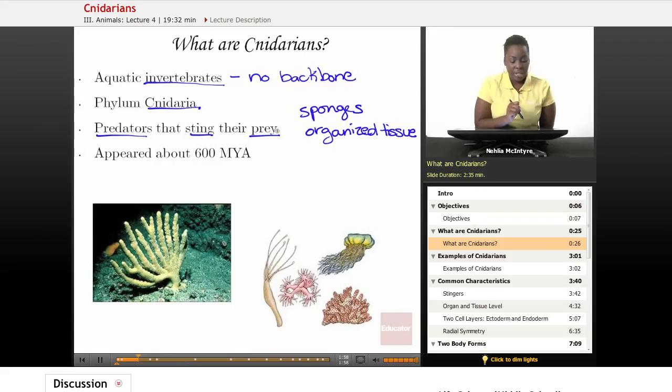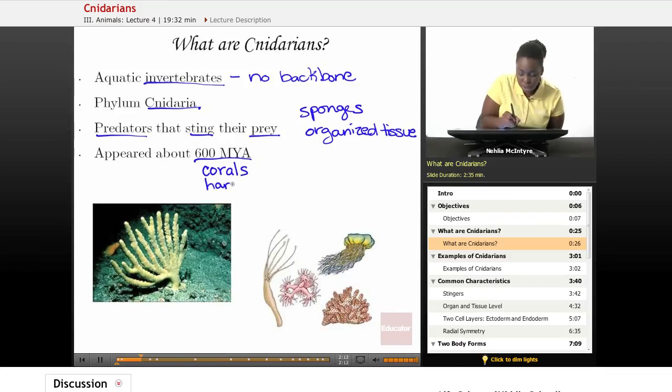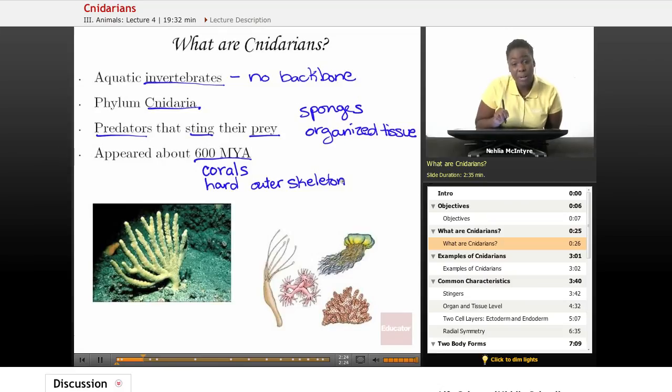Also, Cnidarians appeared about 600 million years ago. The first fossils were actually a type of Cnidarian called corals. And corals have this hard outer skeleton made from those stinging cells that keeps the predators away, but also helps them to find and keep a constant food source. And this would be a picture of a coral.